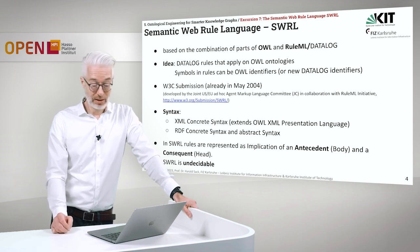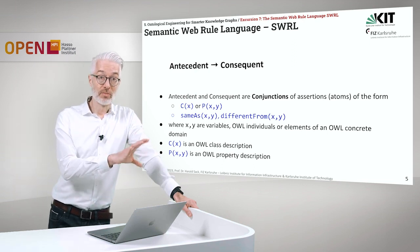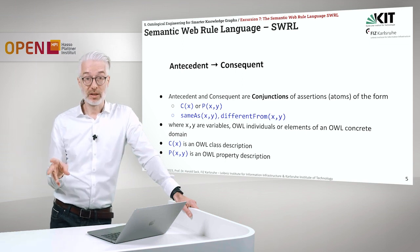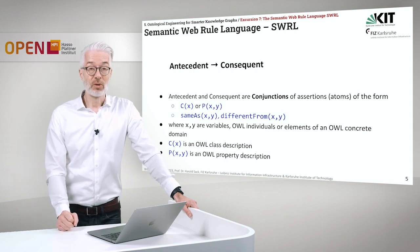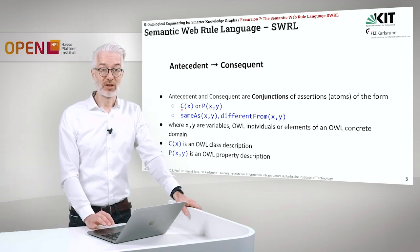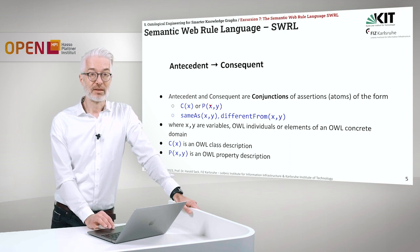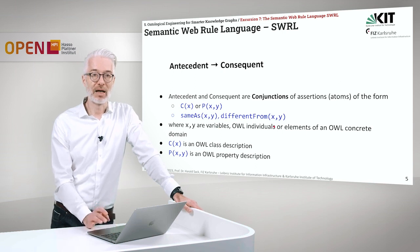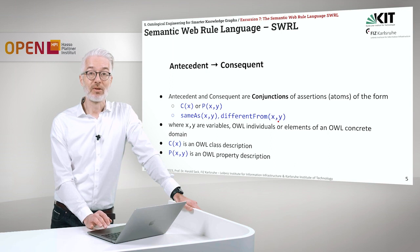We can still live and work with it. Our rules consist of a body, which is the antecedent, and the consequent. Both of them are conjunctions of atoms of the following forms: either a class expression C of X, or a property description applied on X and Y. X and Y are variables, OWL individuals, or elements of an OWL concrete domain. We can also say that these two elements might be the same — the sameAs expression — or that they are different from each other: different(X, Y).